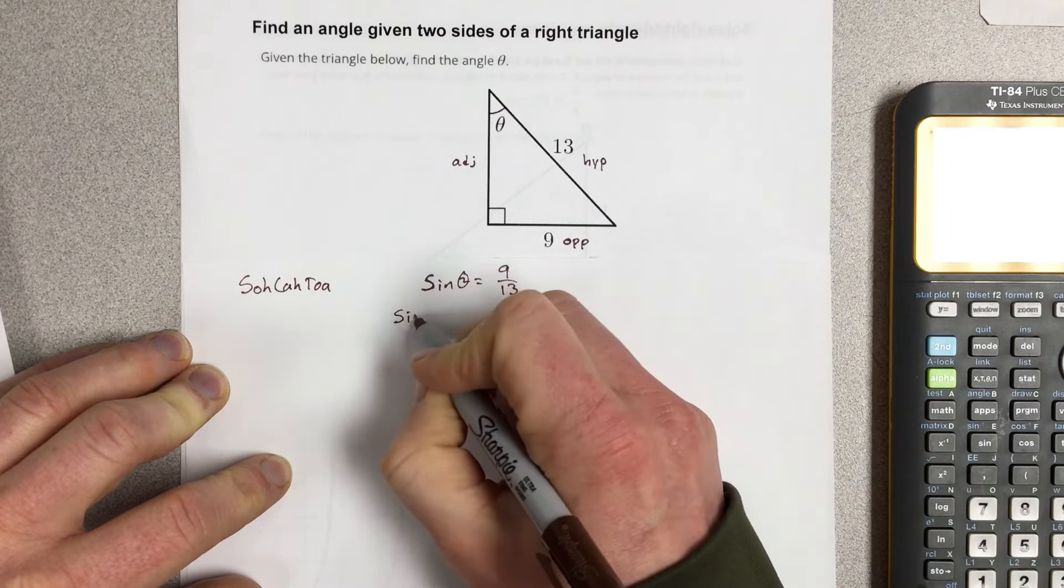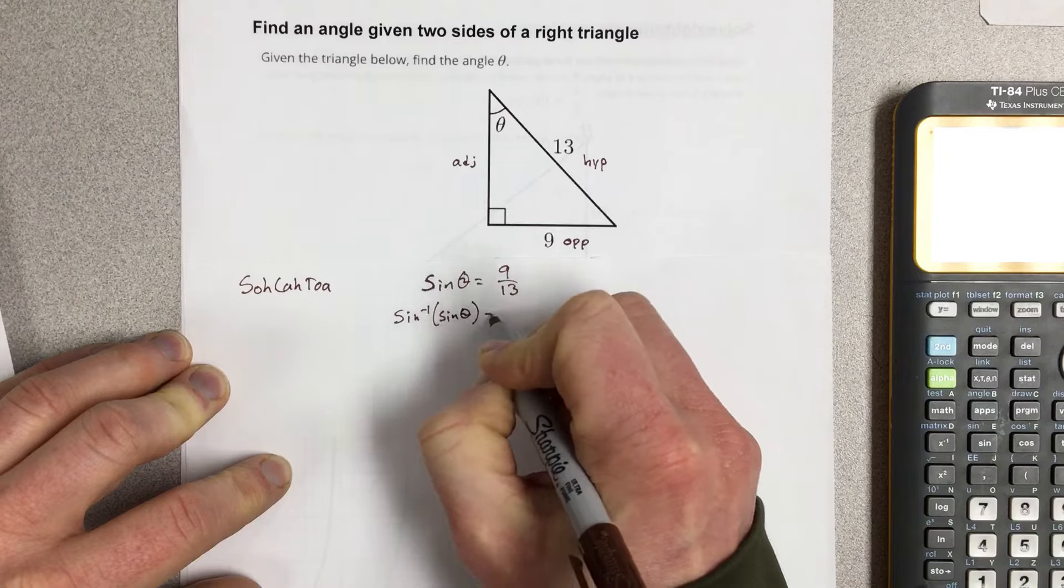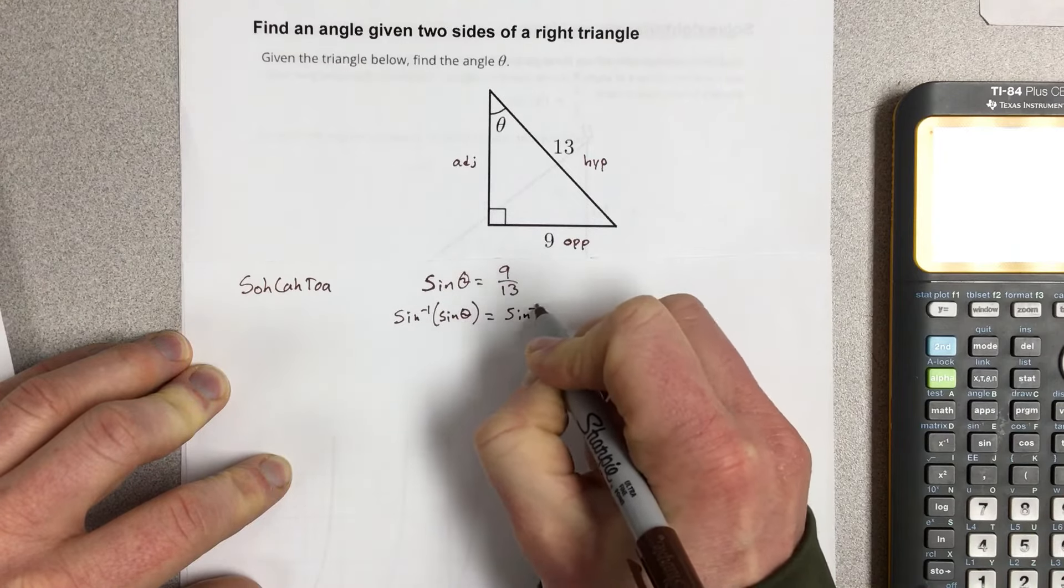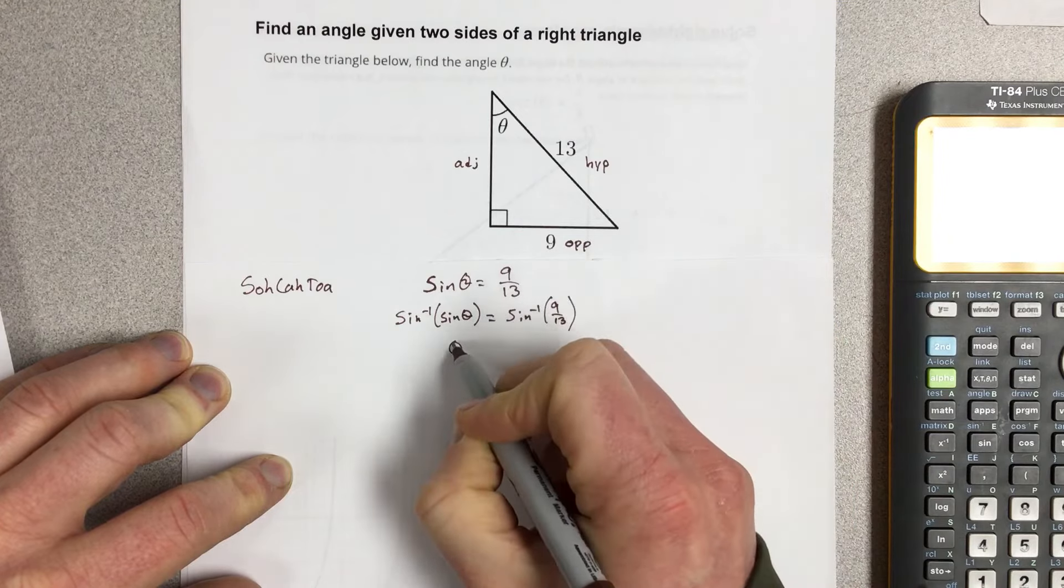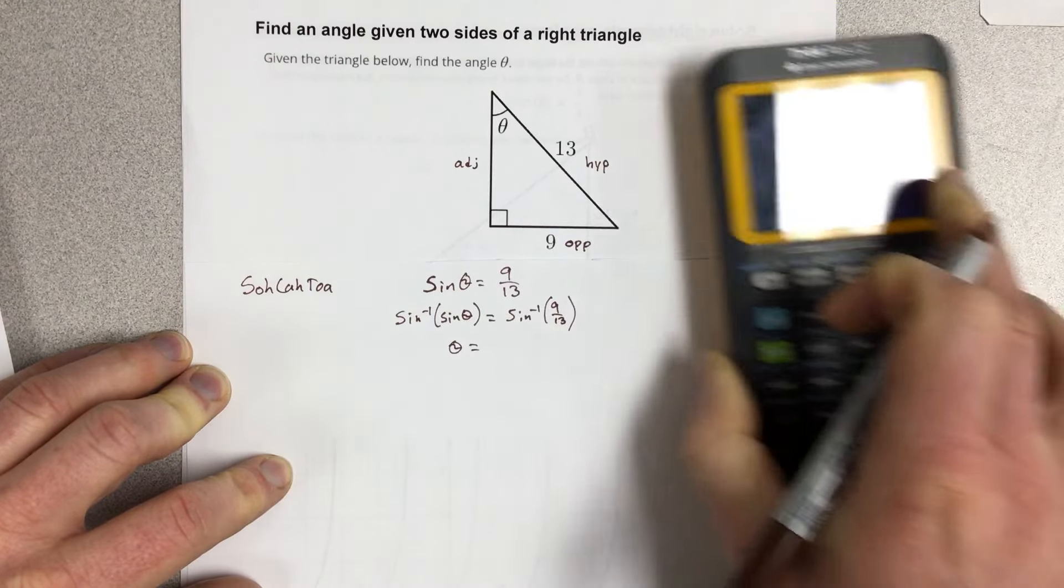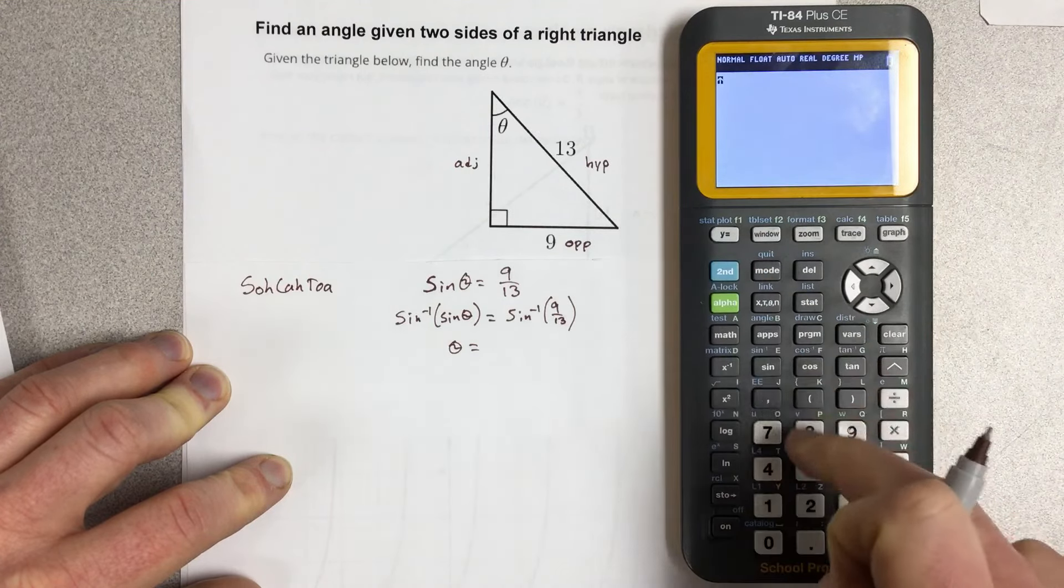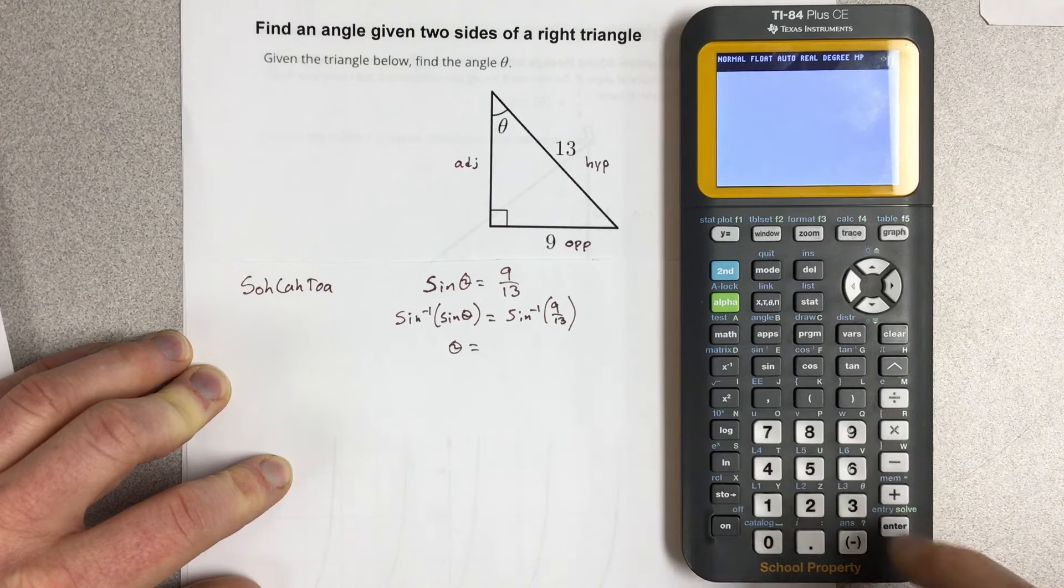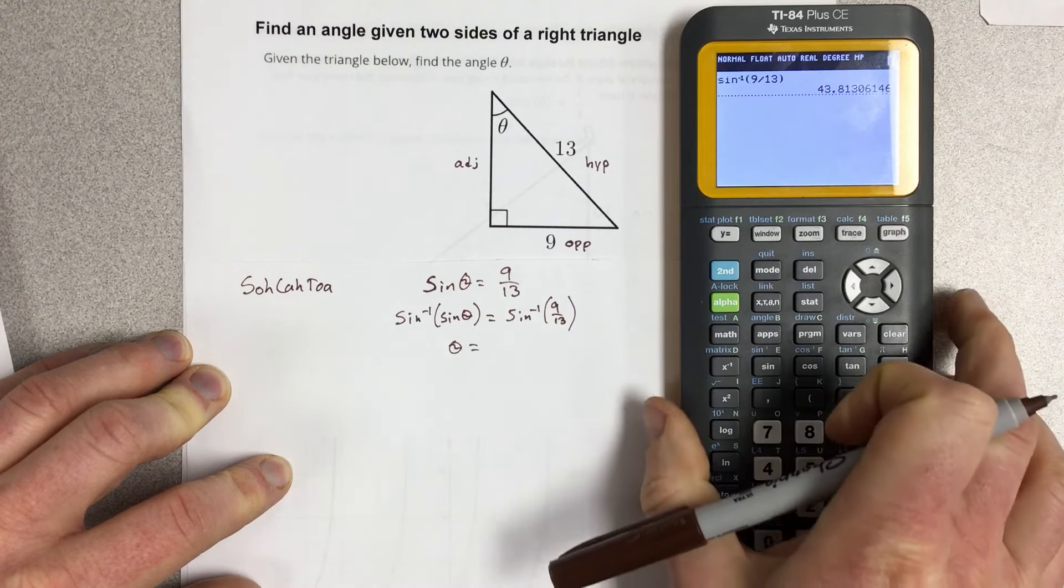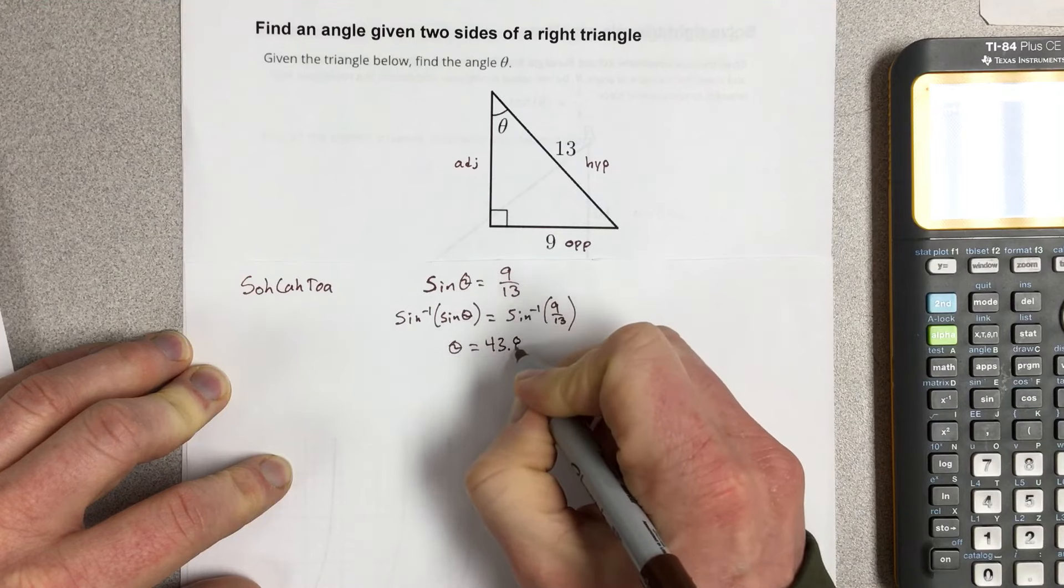So I'm going to take the sine inverse of each side. I get theta equals sine inverse of 9 divided by 13. I got 43.8 degrees. So theta would be 43.8 degrees.